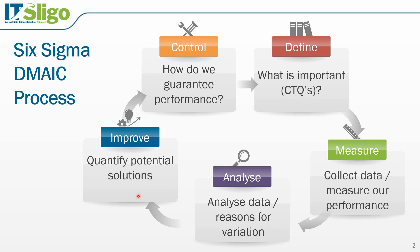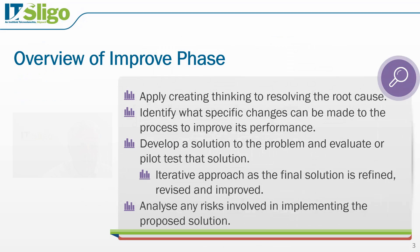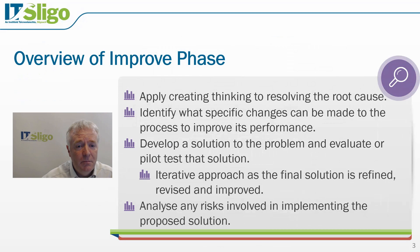The objectives of the Improve phase are to develop a solution to the problem and then test that solution using confirmatory experiments. During this phase the original solution may be refined, revised and improved several times as more information becomes available from our experiments. We apply creative thinking to resolving the root cause identified in the Analyse phase.